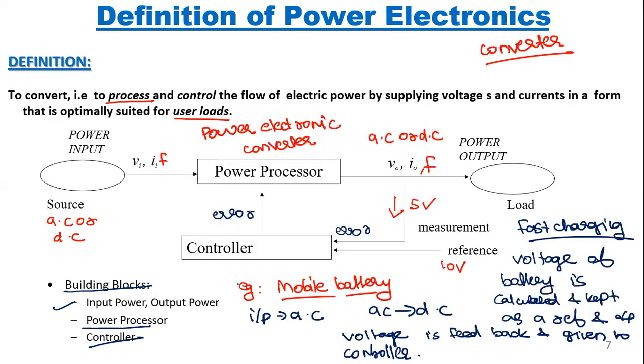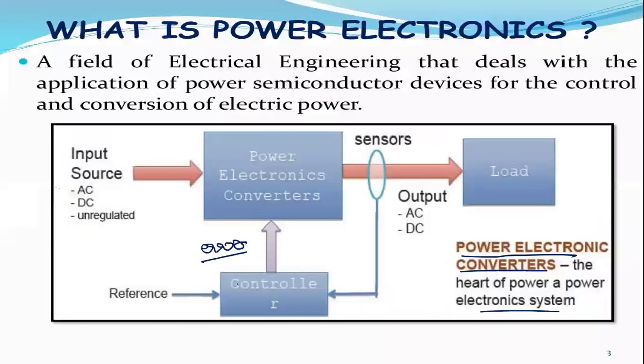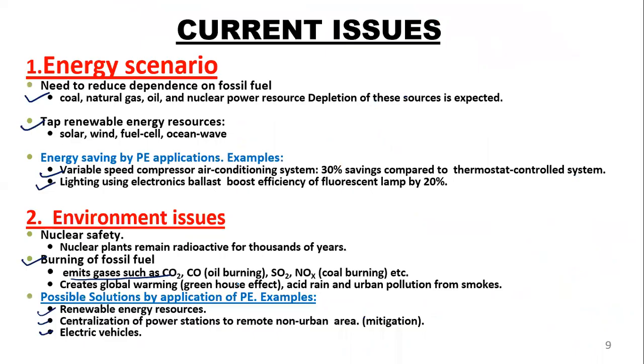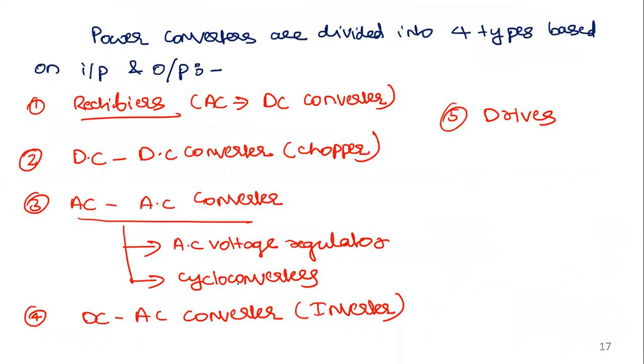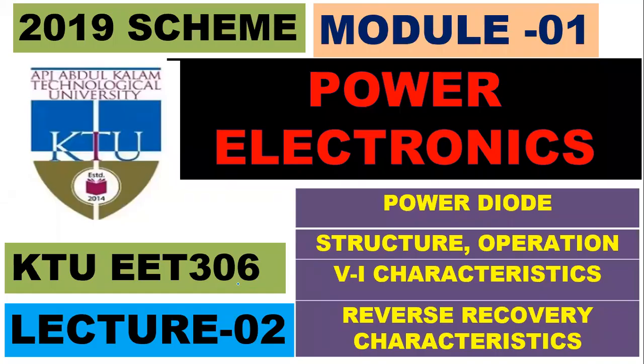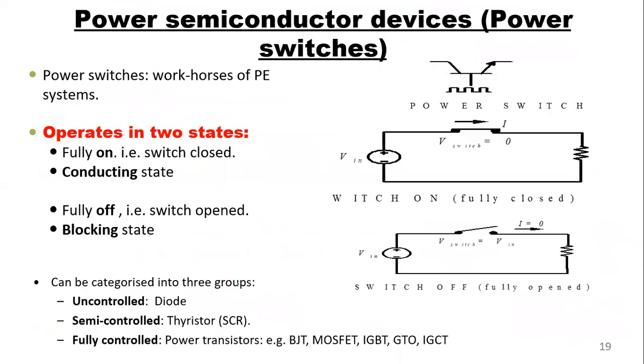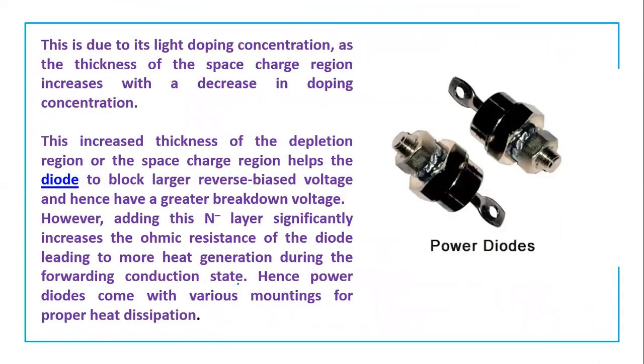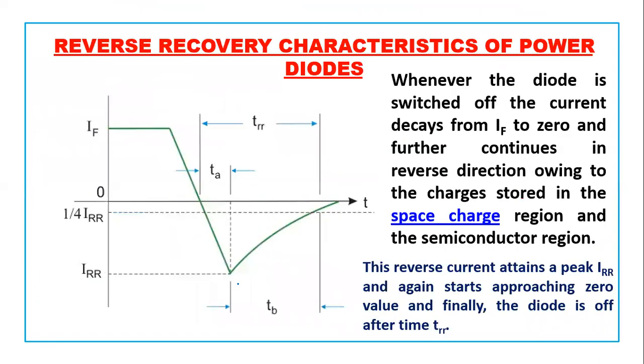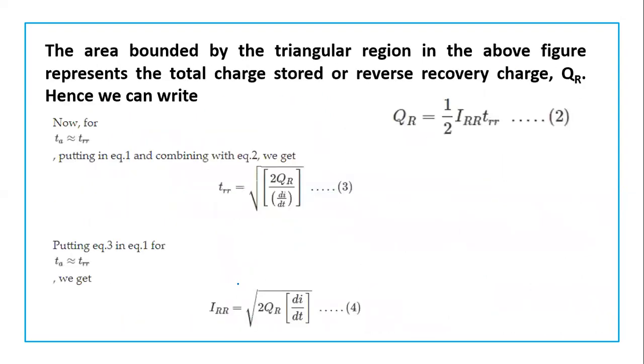If you see from the beginning, in the first class, we have seen about what is the subject, then difference between power diode and signal diode. We have seen different energy scenarios. These are just basics, power and signal diodes, then different types of converters, what this module is all about. Then we started to study about power diode structure, VI characteristic, and reverse recovery characteristic.